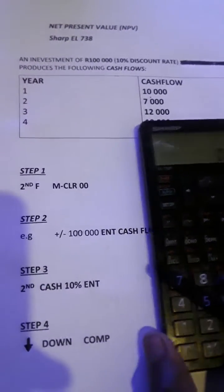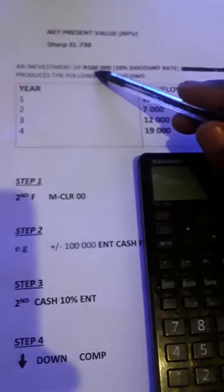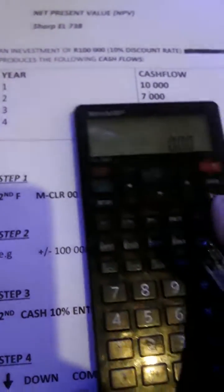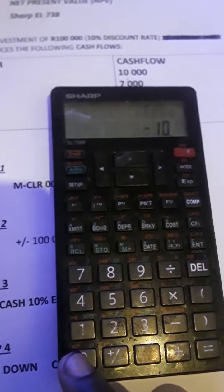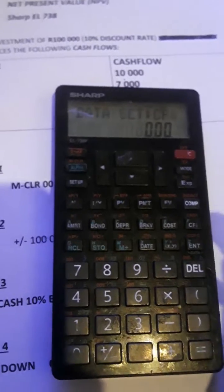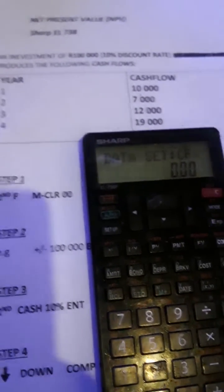So this one is supposed to be entered as a negative because this is an outflow. We press Enter ENT straight into the cash flow memory. Now the cash flow that we receive should be entered as positive.